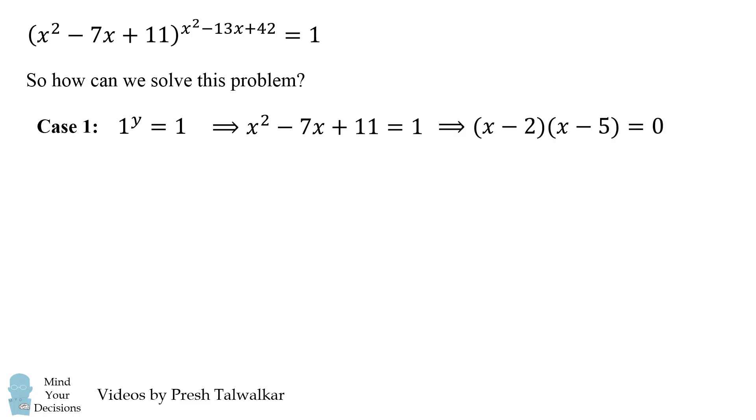We can factor this to get (x - 2)(x - 5) = 0. This gives the two solutions of 2 and 5.